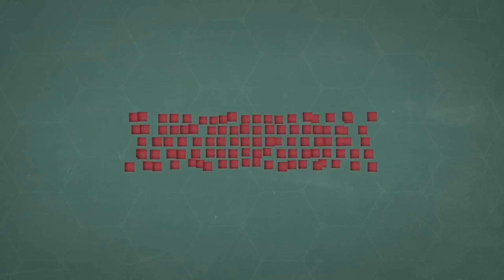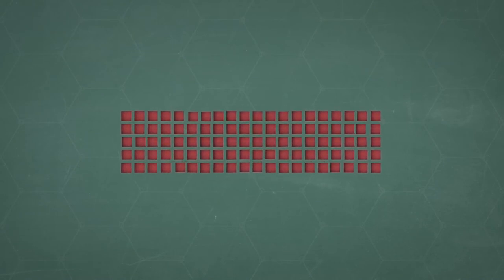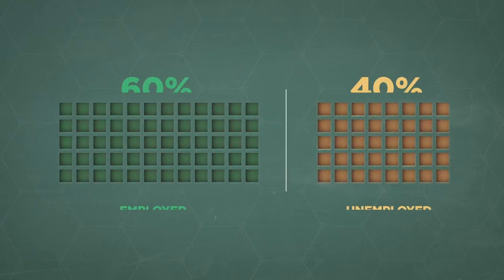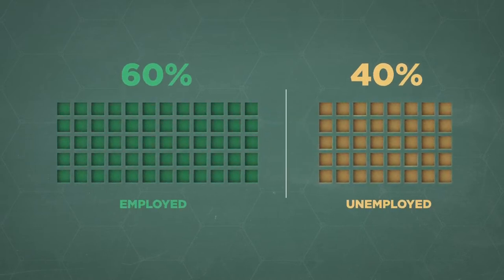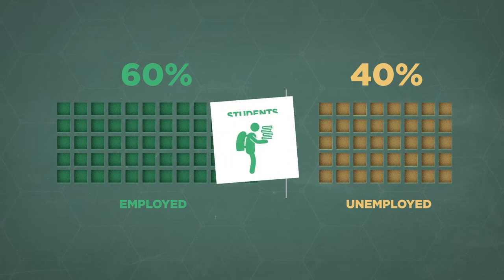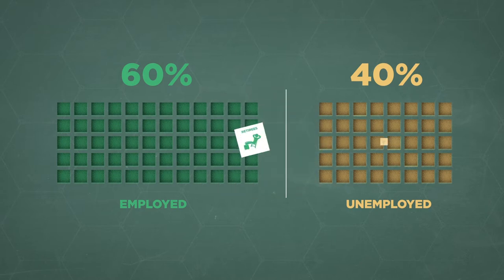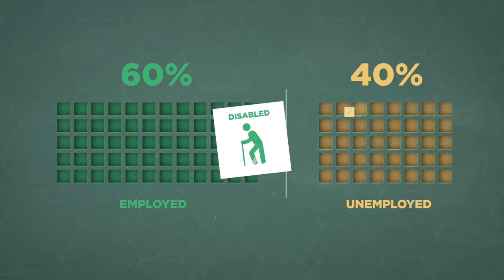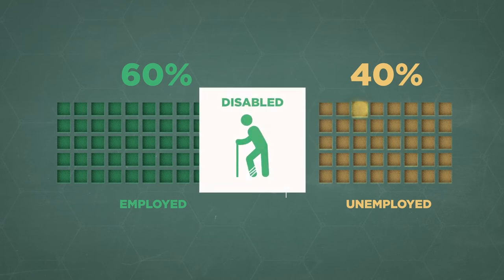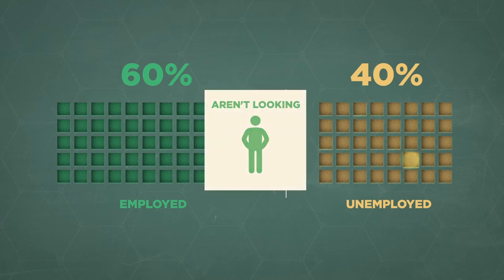So why is calculating unemployment so hard? Just add up everyone who doesn't have a job, right? Well, that rate would currently be about 40% — higher than in the Great Depression. So that seems off, and it's because if that were our method, we'd be counting students, retirees, people with disabilities, and a bunch of others who aren't looking for a job.